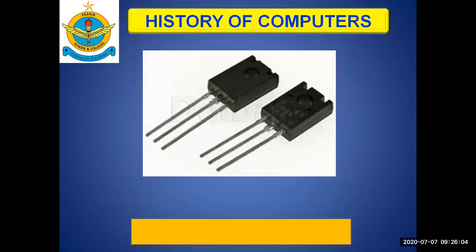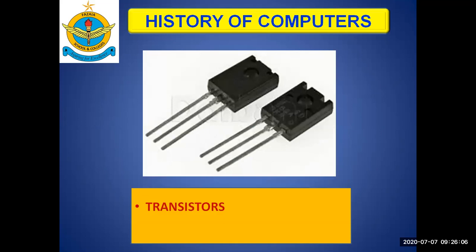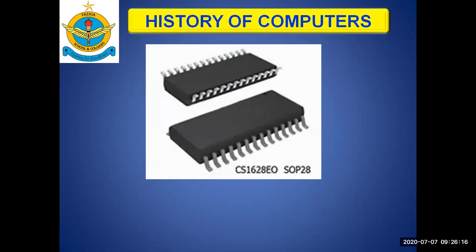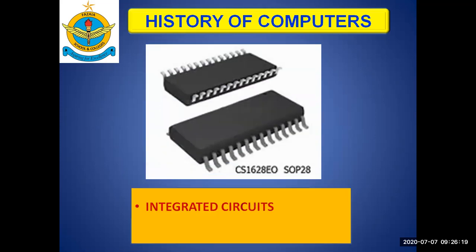Then came the technology of transistors, which reduced the size of computers a lot. It was developed in 1956, and after transistors came microchips, also called integrated circuits. We also give them the short form ICs.